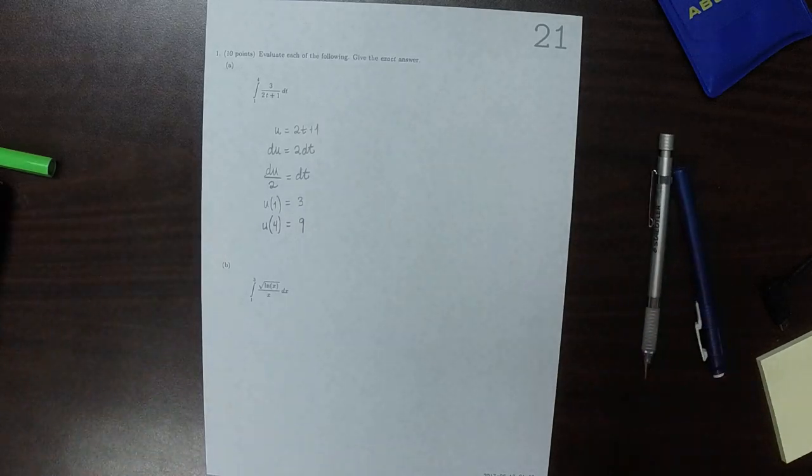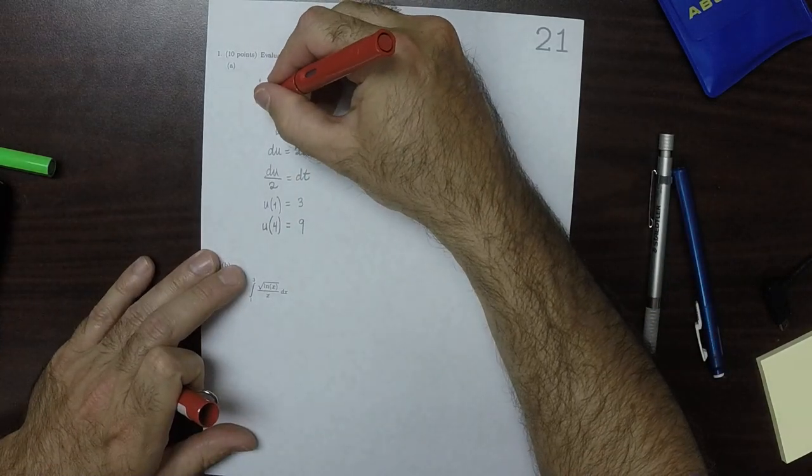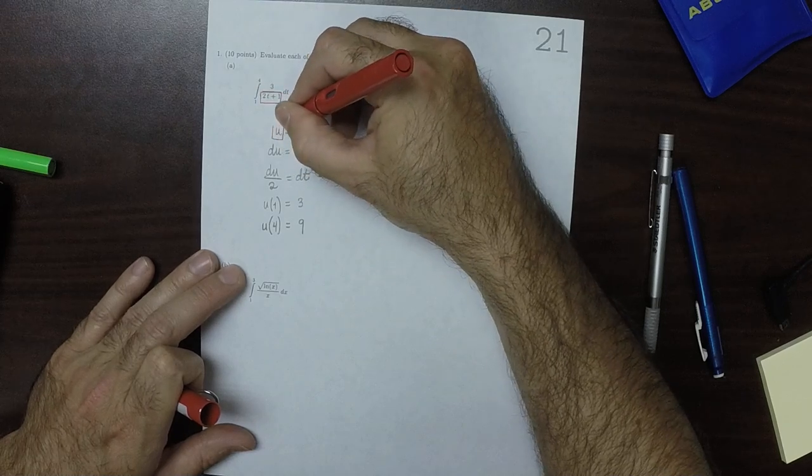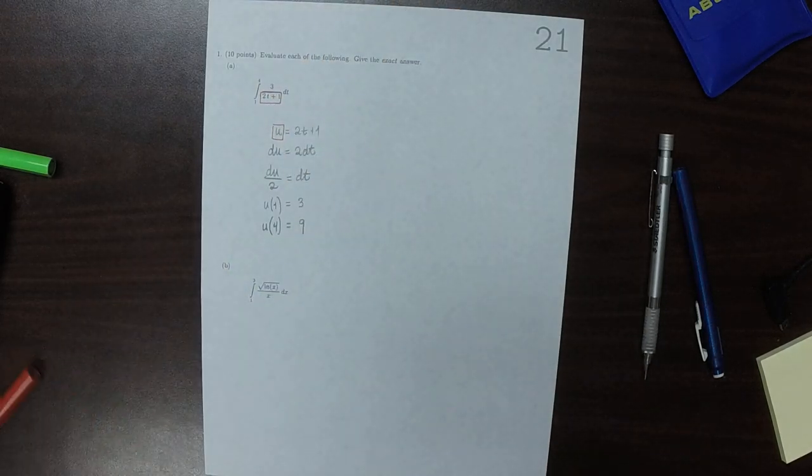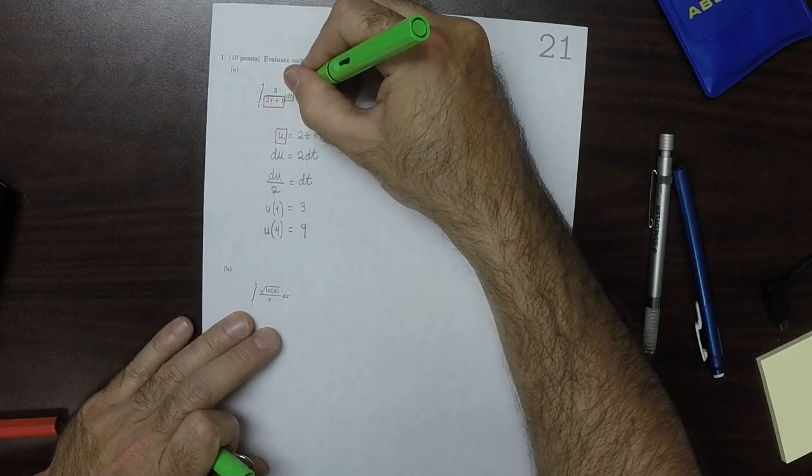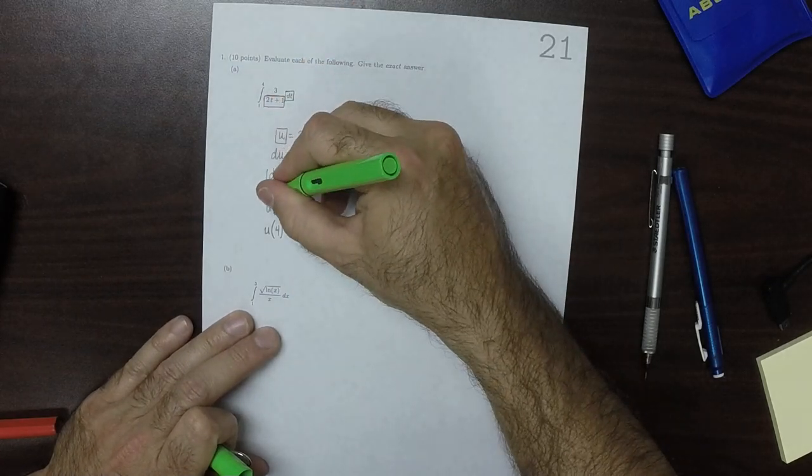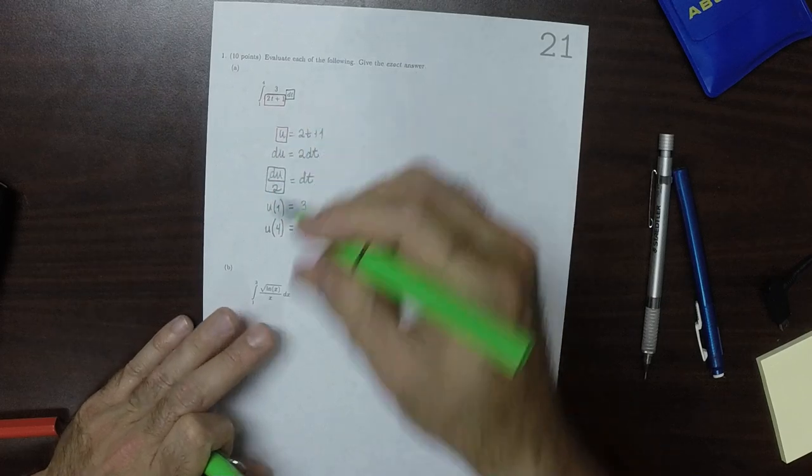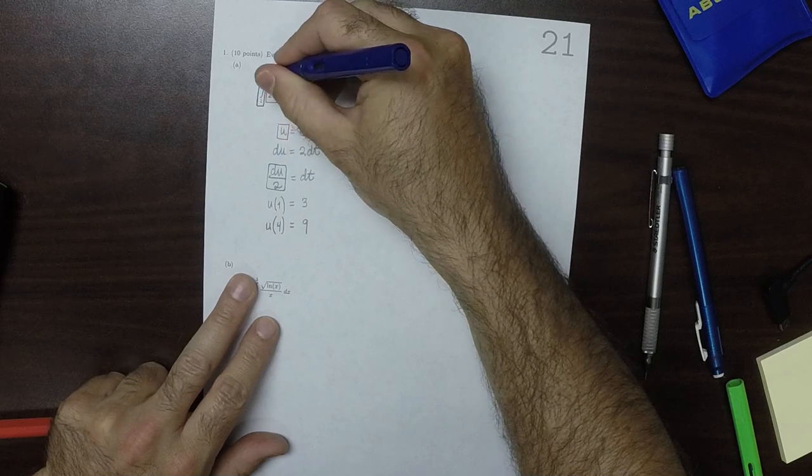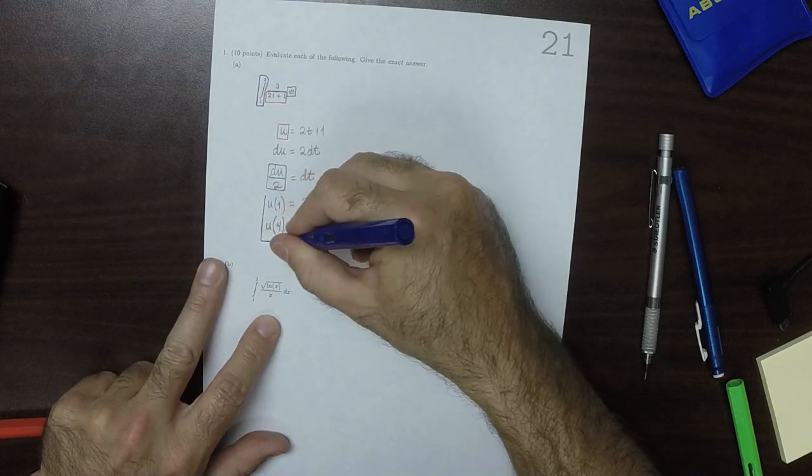Which is to say, the correspondence. This red bit will be replaced with u. u, dt will be replaced with du over 2. And the limits will be replaced with these.